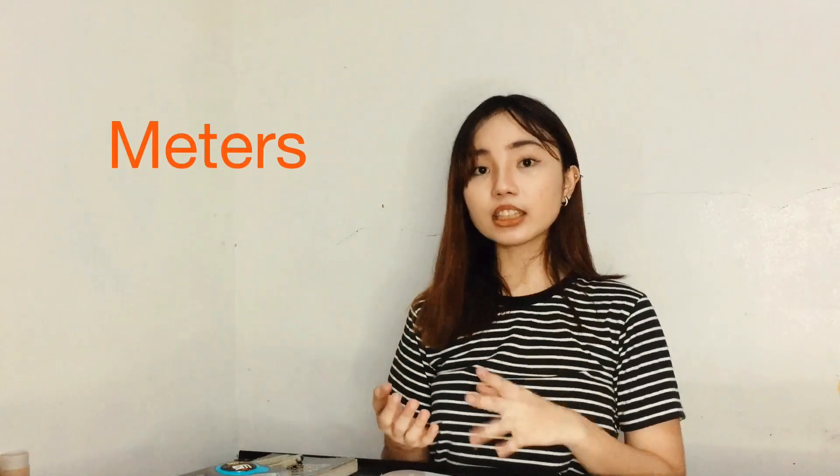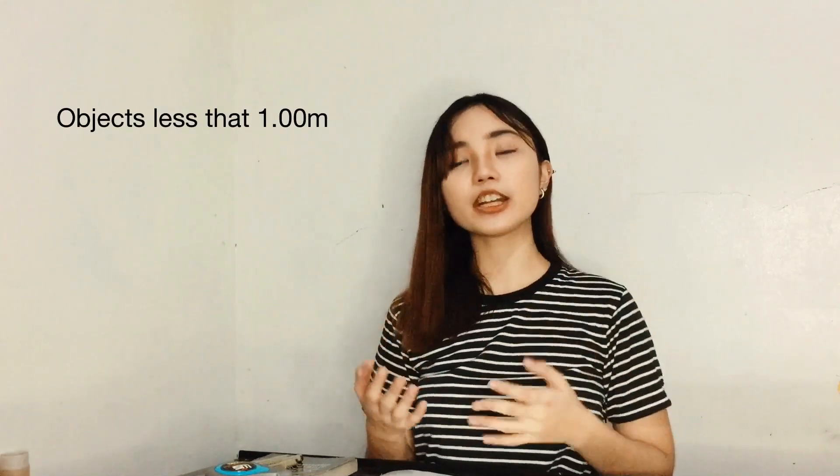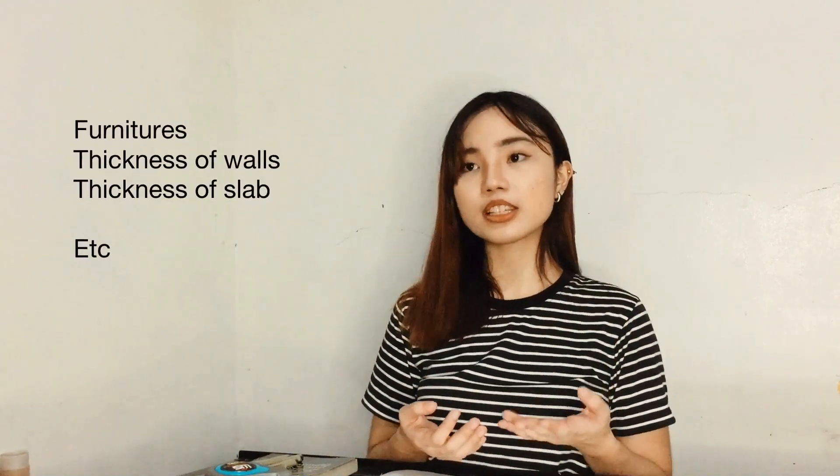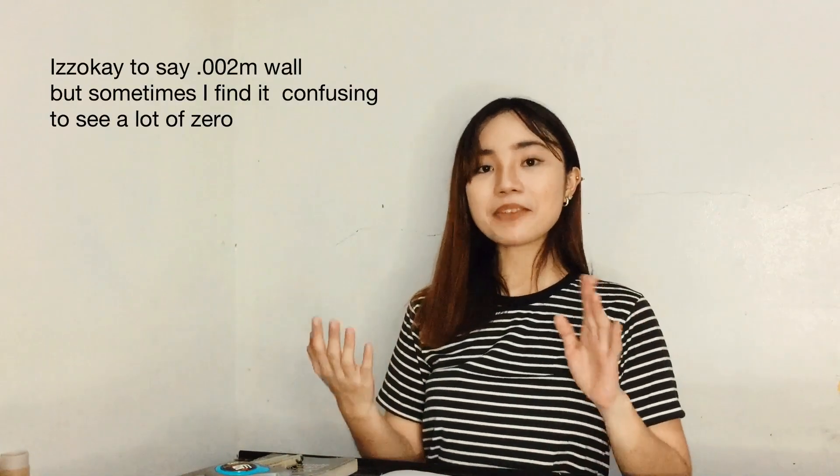So most of the time, what we're using in architecture is meters. That's really the standard we use, especially in floor plans and elevations. Most of the time, you'll also hear people using millimeters and centimeters, especially for small objects like furniture or the thickness of walls. Because you wouldn't say 0.002 meters wall, right? You would say 2 millimeters wall.